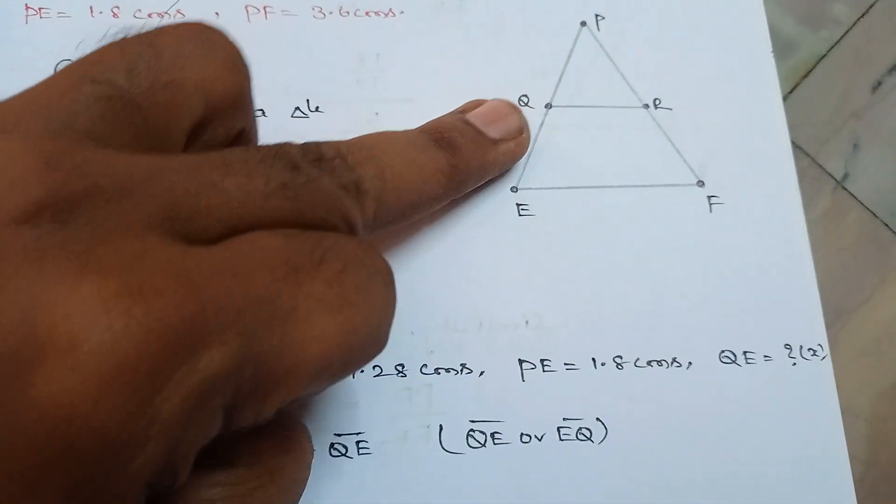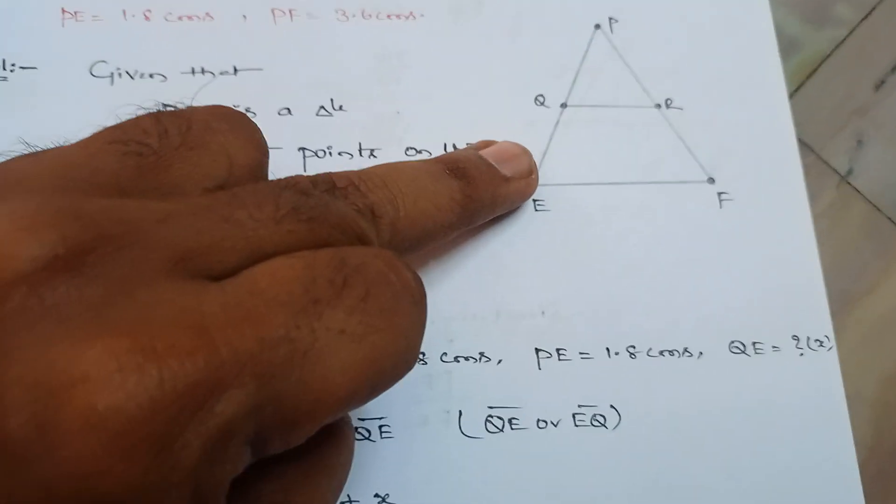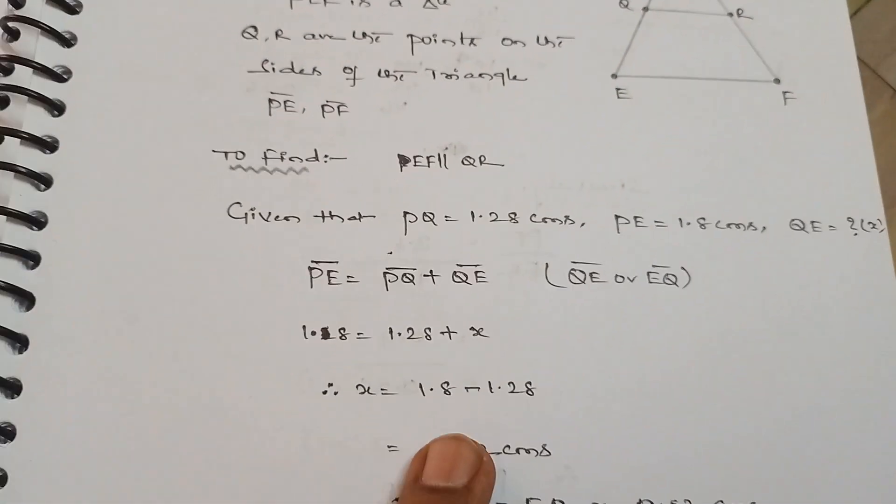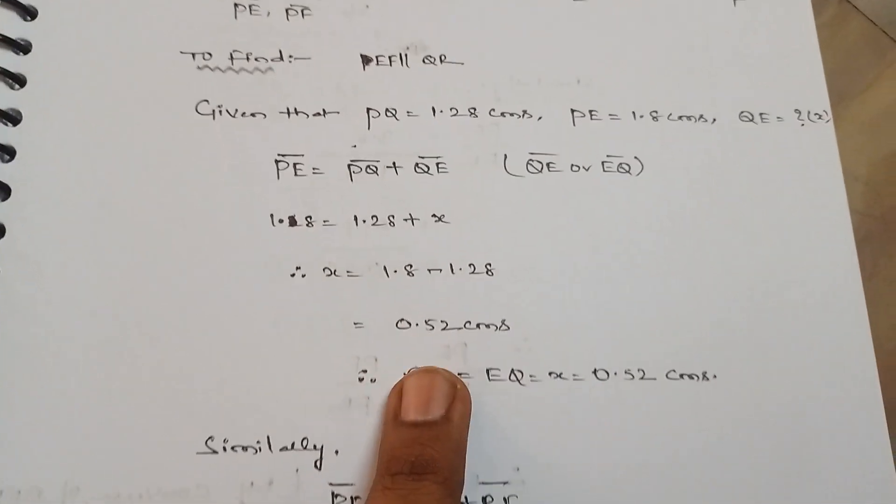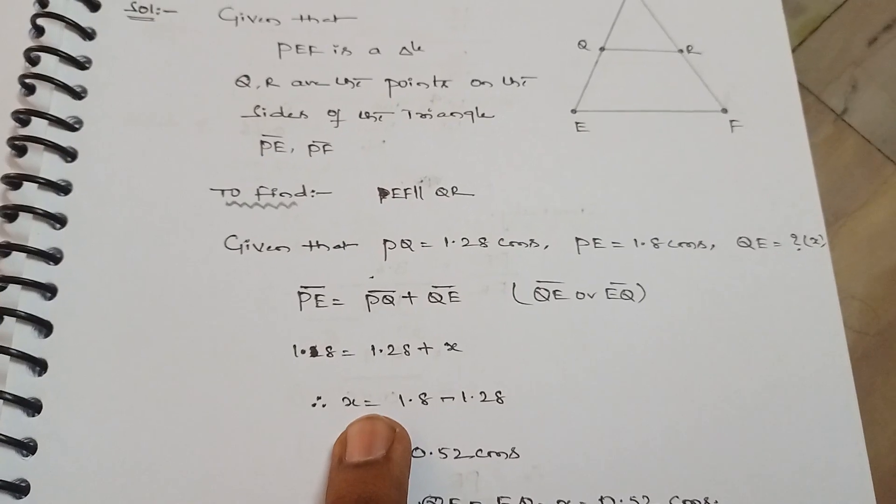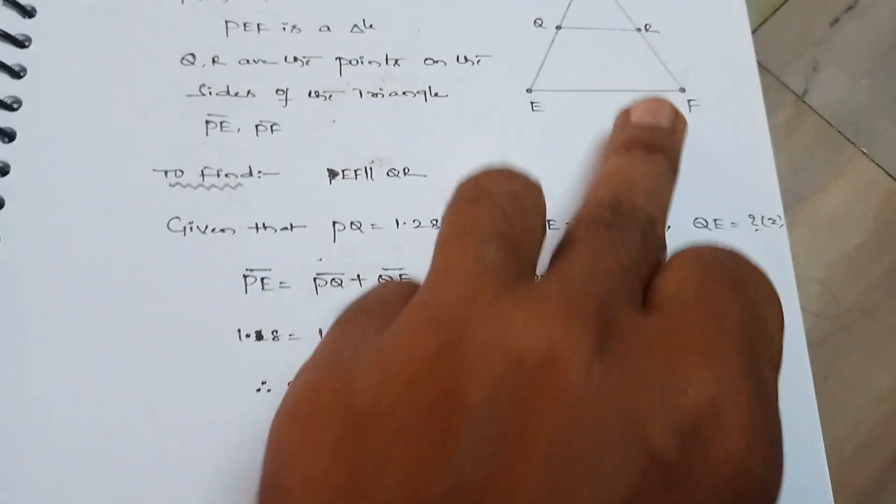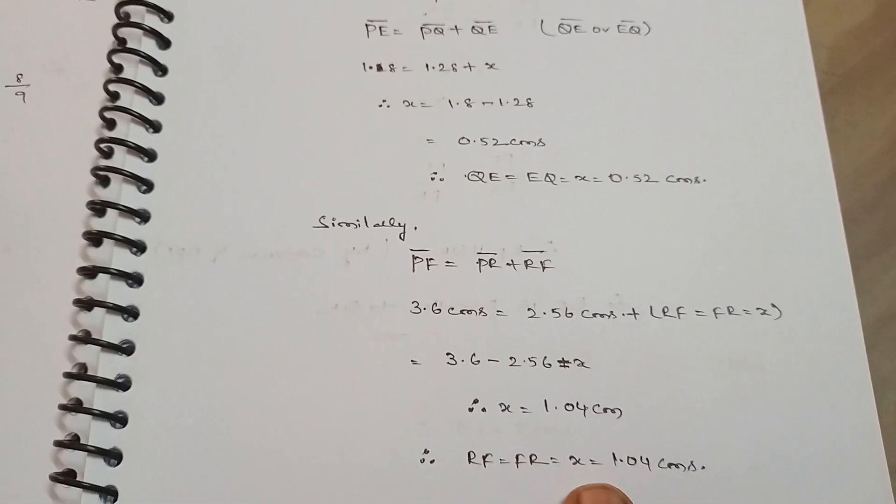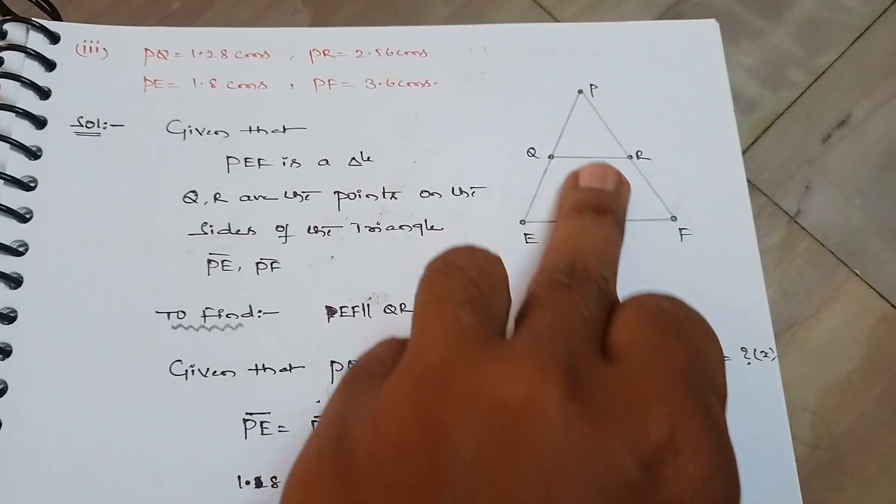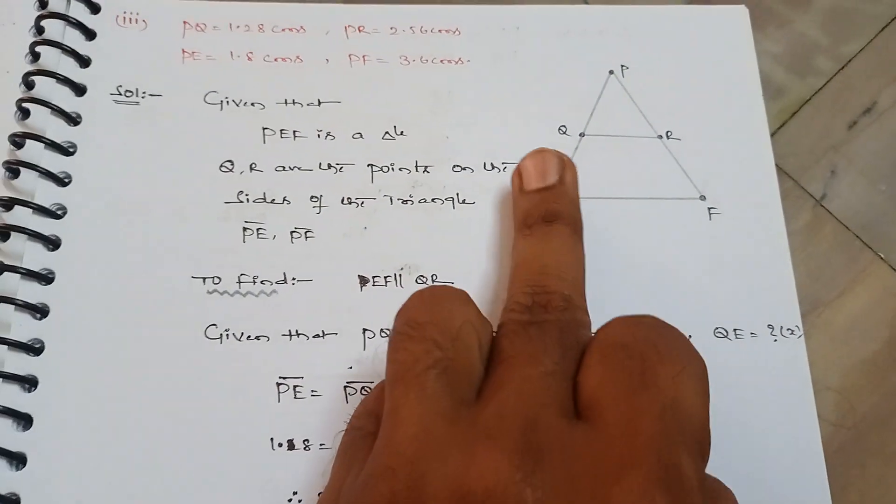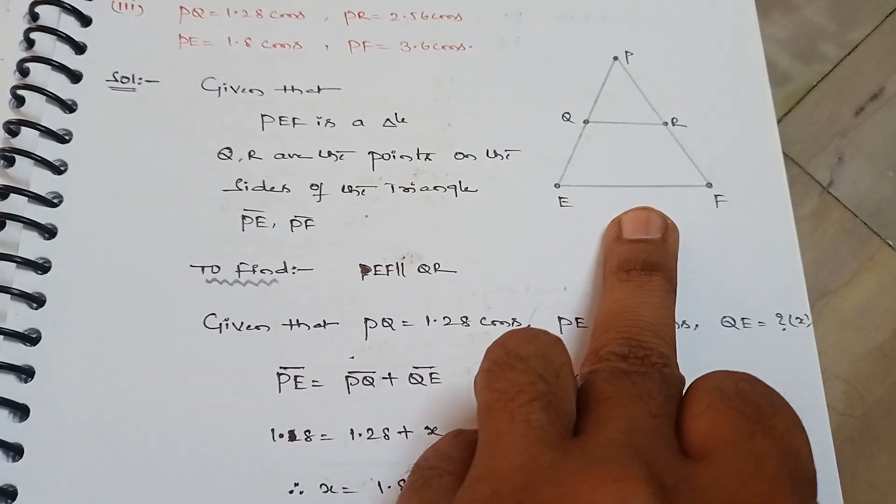So that only I mean, we simplified here first step. So we got QE value as 0.52 and we got RF value as 1.04. Okay, now we got all the dimensions on the triangle, right? Now we can find whether QR is parallel to EF or not.